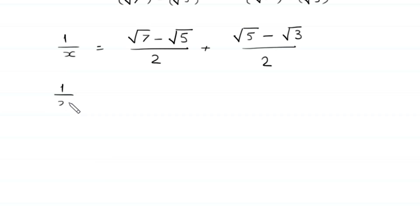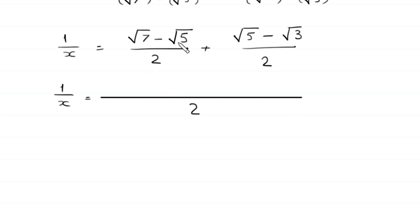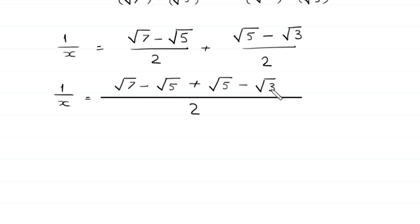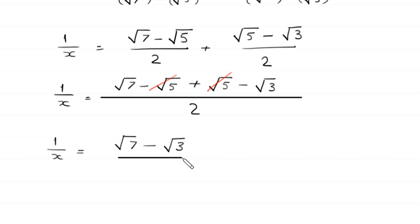Next, 1 over x equals with the common denominator 2: square root of 7 minus square root of 5 plus square root of 5 minus square root of 3, all over 2. The negative square root of 5 cancels with the positive square root of 5, leaving 1 over x equal to square root of 7 minus square root of 3, divided by 2.